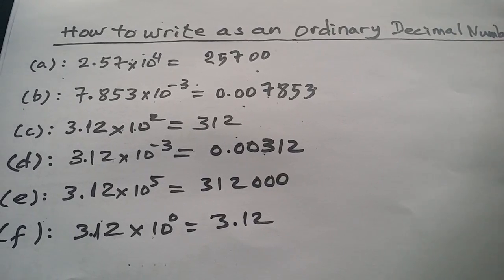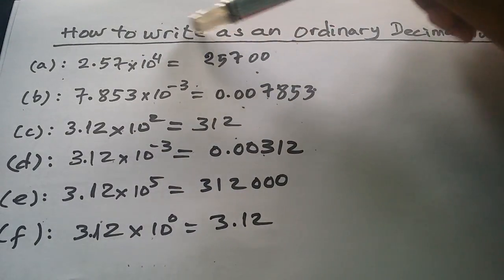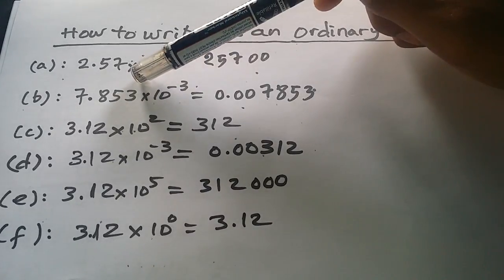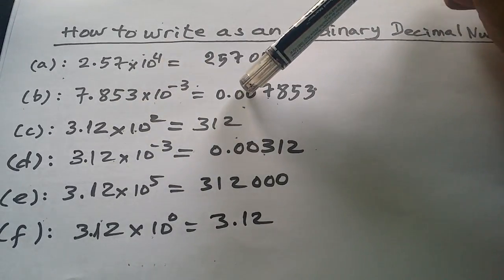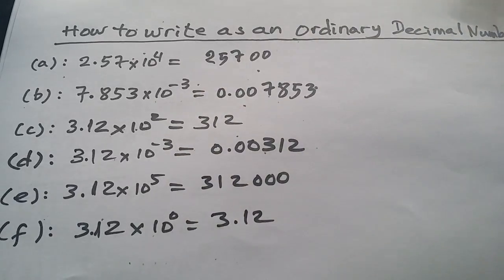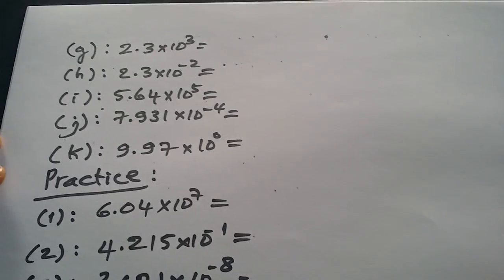And then we put it 0.003 times. We count the number 0.003 times for minus two, something like this.